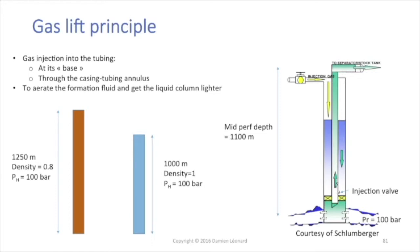The effect of that gas is that it's going to aerate the formation fluids and therefore get the liquid column lighter.